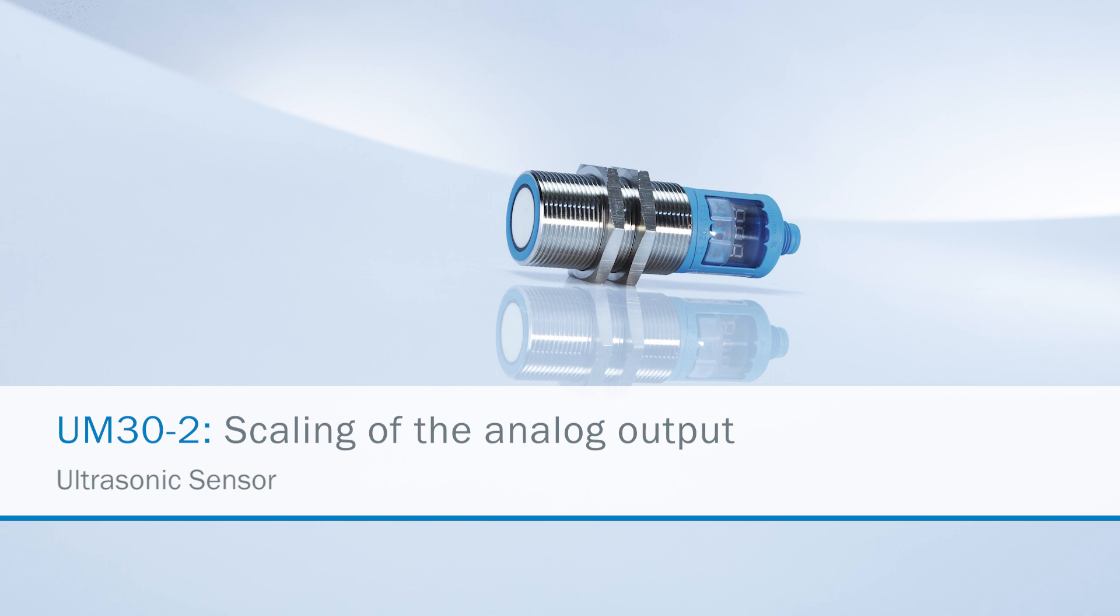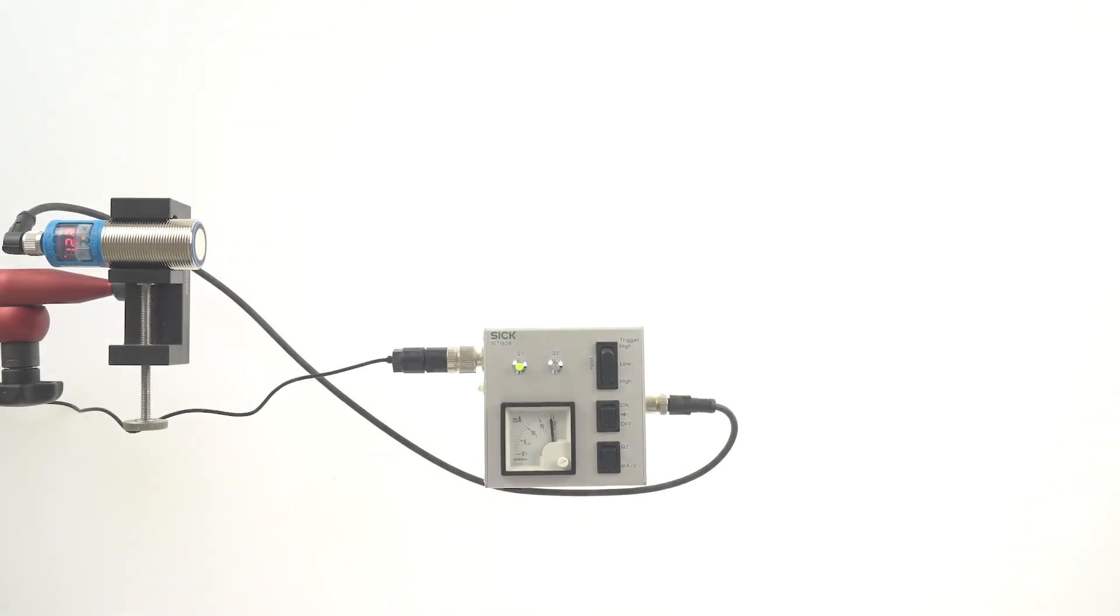For this we will use an actual setup. A UM30-2 is horizontally clamped in a flexible arm. We have connected a sensor demonstration box between the power supply and the UM30-2.